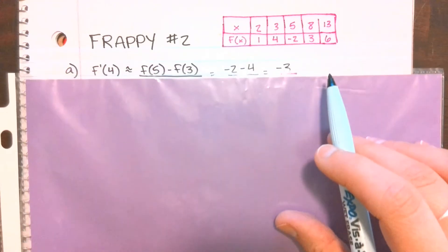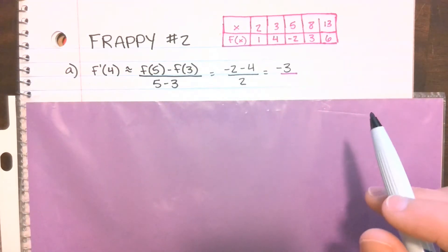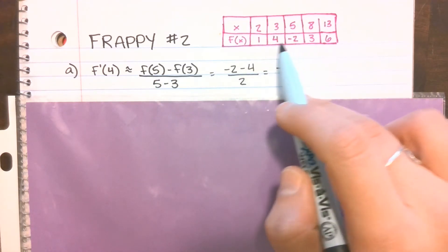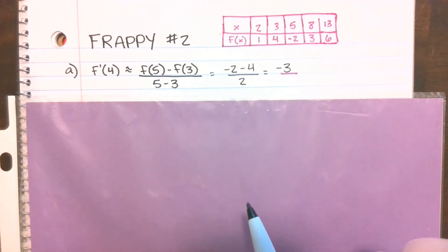Even if we were given a value, it wouldn't be the slope, but we can use the values that are closest to it to approximate the slope. So if we find the slope between five and three, we're going to get a slope of negative three, and that is as close as we can get with this information for the instantaneous slope at four.